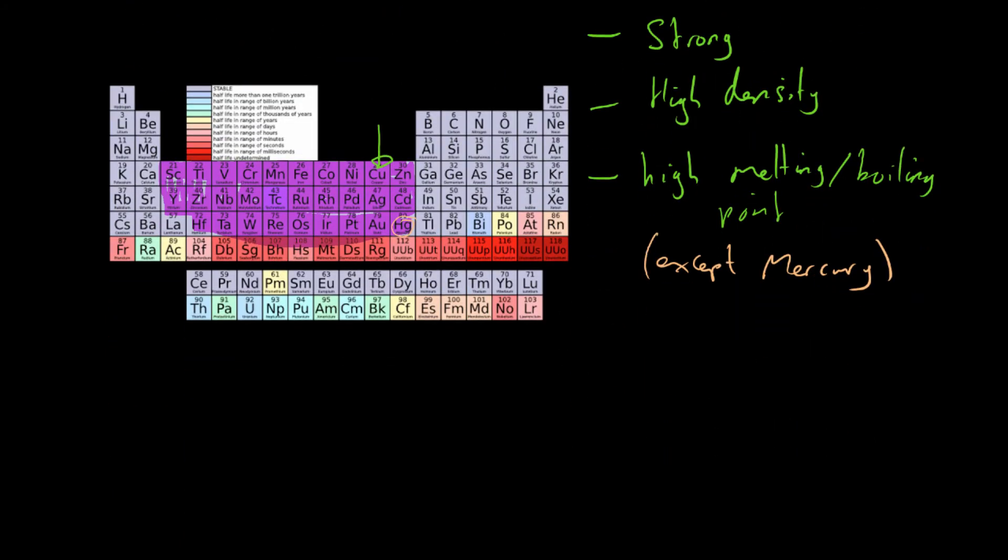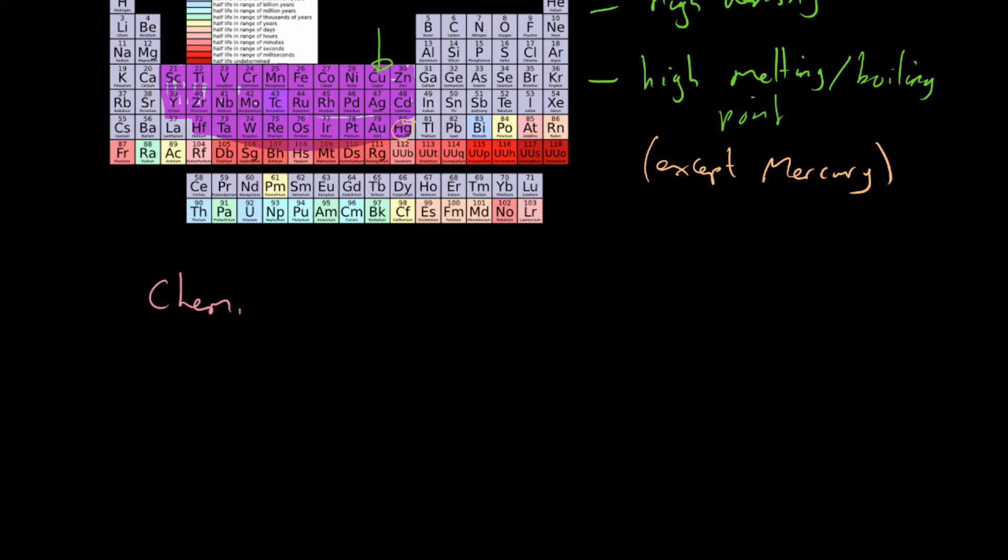So in a different colour, I'm going to say chemical properties. Now the first thing to note is that they are not very reactive. That is in comparison to things like the group one alkali metals which are extremely reactive. Potassium is top of the reactivity series. All the group ones are very reactive. The transition metals are less so.